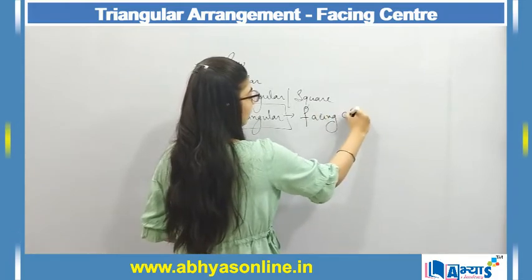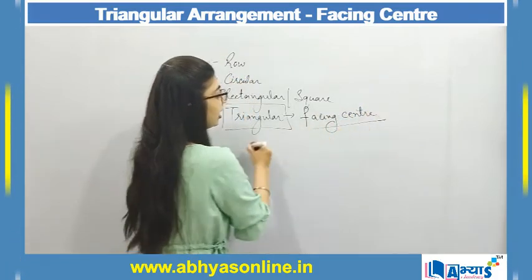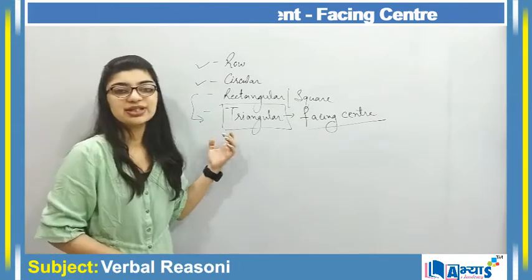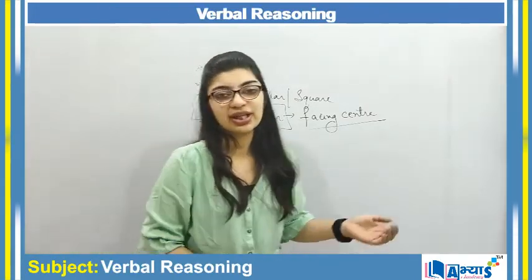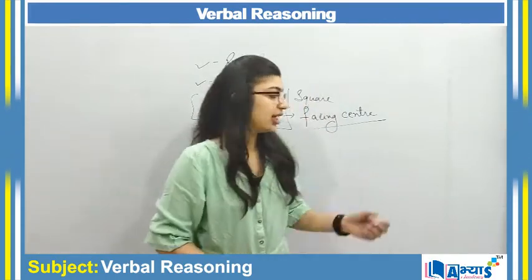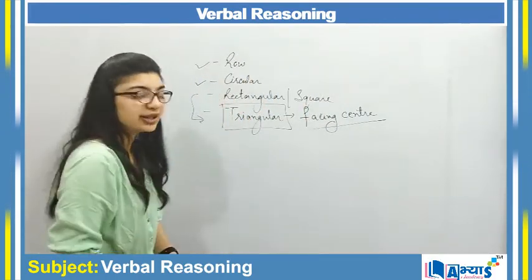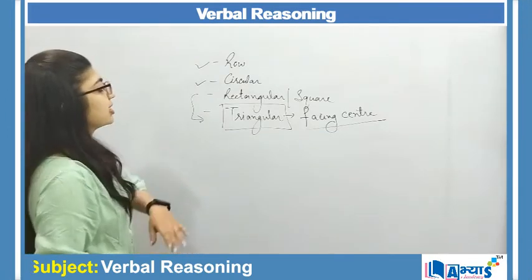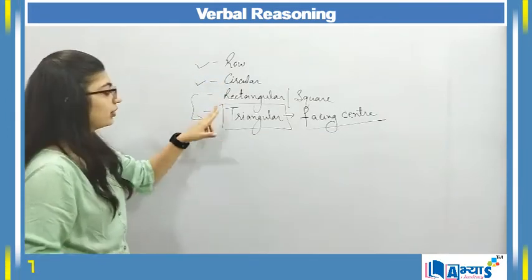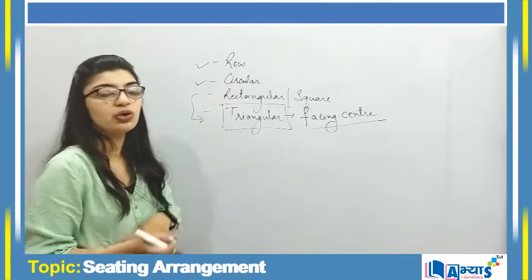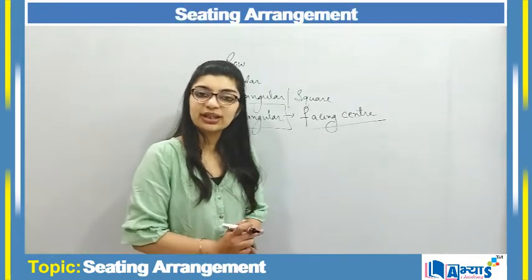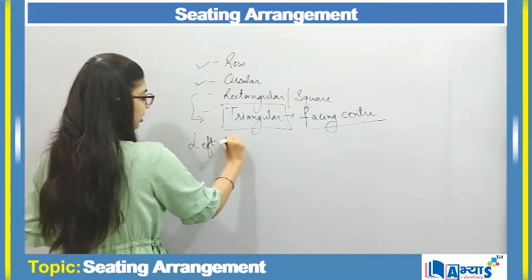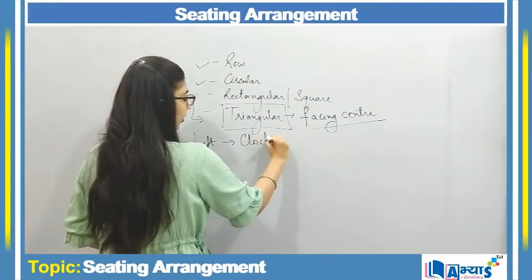Today's questions will involve persons facing the center. Let's revise the logic of facing center. When a person is facing center — whether it is circular, rectangular, triangular, polygonal, or any arrangement — if you are facing center, then left means that the person has to turn in the clockwise direction.